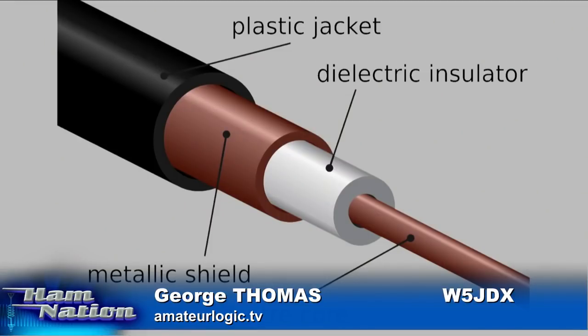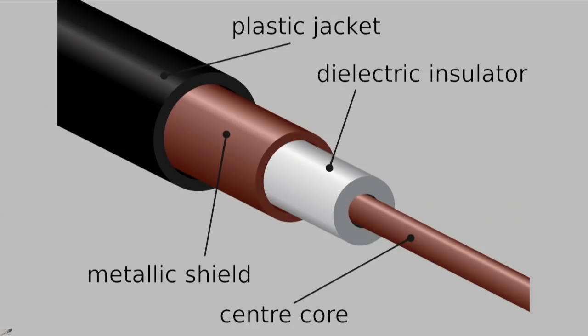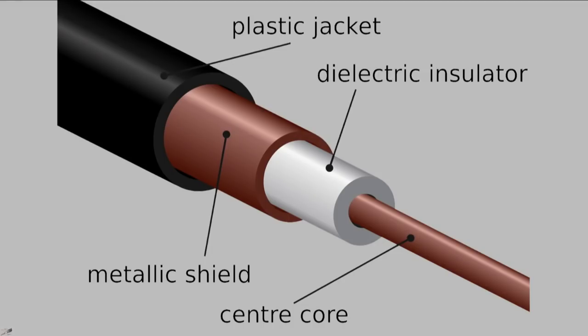A lot of this stuff now has both a foil shield and a wire braid shield on it. Coaxial cable is exactly that — it's coaxial. On the outside there's a plastic jacket. After that you've got a metallic shield, and that can be foil, copper braid, or aluminum braid on some cheaper television coax. It could actually be a solid copper pipe. Then you've got the dielectric insulator.